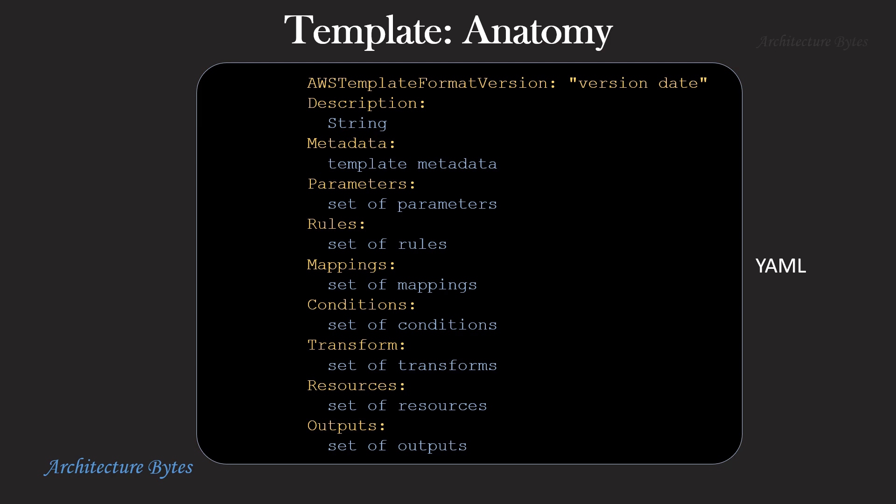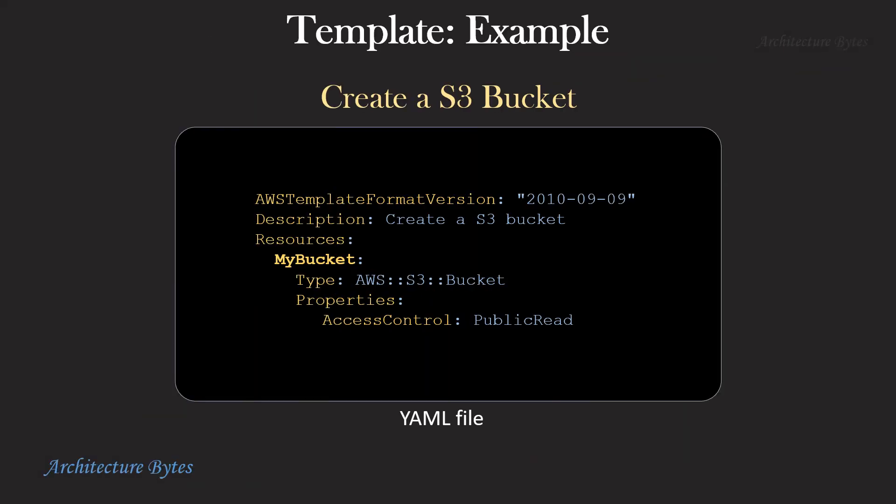Let's look at an example. This is a simple example of creating an S3 bucket. Under the resources section, my bucket is the name of the resource and the type is AWS S3 bucket.